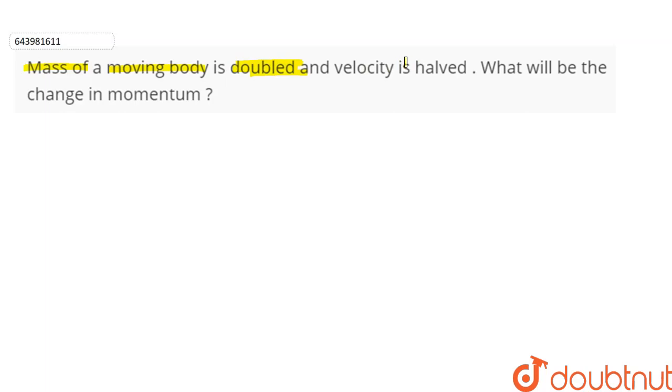doubled and velocity is halved. What will be the change in momentum? So initially, the mass of the moving body is m and the velocity is v. These are the initial conditions.